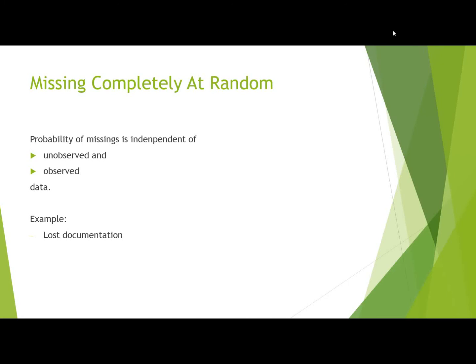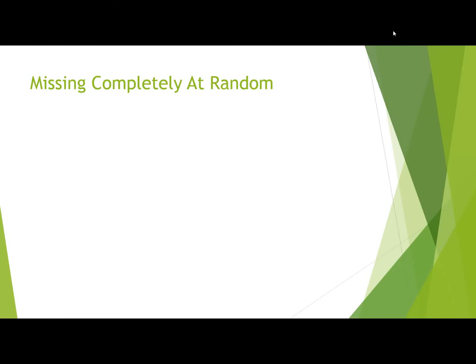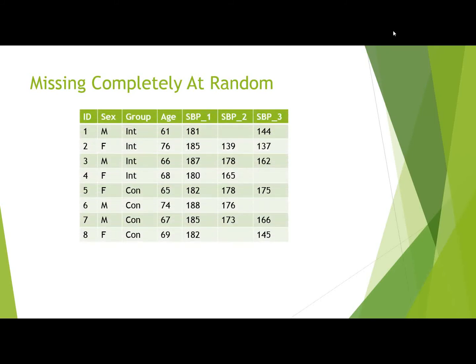For example, if there are lost documentations or if somebody broke his leg and wasn't able to come to the second visit — but it must not be dependent on the value we are measuring. Looking at our data, for missing completely at random there's nothing behind it — it's not the age, the sex, the intervention group, or the controls. They're just missing; we don't know why.